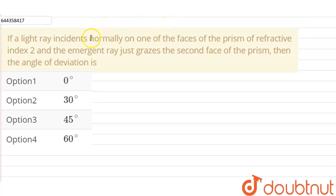If a light ray incidents normally on one of the faces of the prism of refractive index 2, and the emergent ray just grazes the second surface of the prism, then the angle of deviation is. Our options are 0°, 30°, 45°, and 60°.